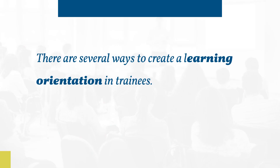There are several ways to create a learning orientation in trainees. These include setting goals around learning and experimenting with new ways of having trainees perform trained tasks rather than emphasizing task-oriented performance, de-emphasizing competition among trainees, creating a community of learning, and allowing trainees to make errors and to experiment with new knowledge, skills, and behaviors during training.